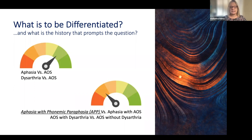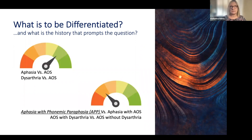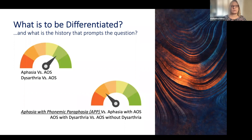It is also easier to make a differential diagnosis when you know the patient's history and presentation, so you're diagnosing in context. You know whether there is a stroke or a progressive disease, what part of the brain was affected, and the other coexisting language, cognitive, and motor deficits that put everything in context. So that is always important to consider.